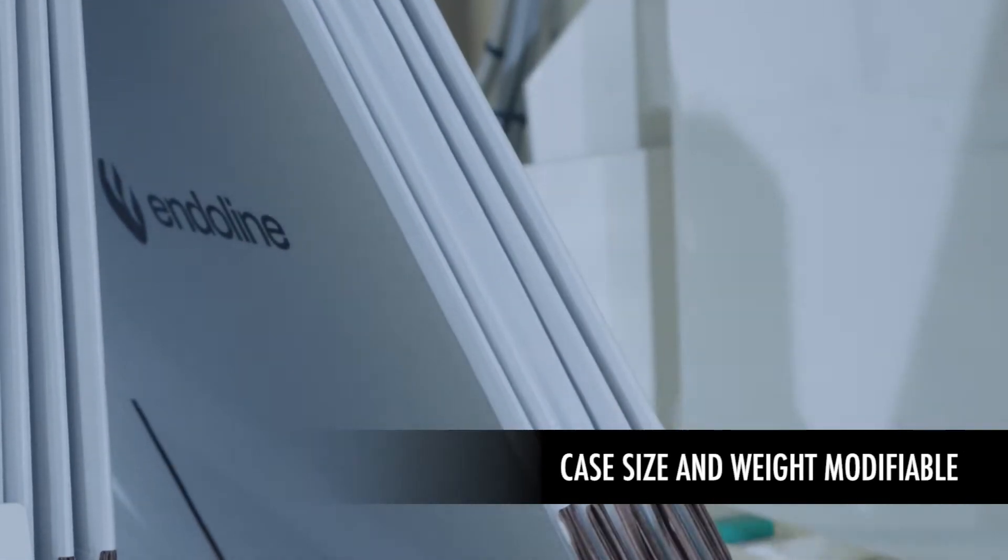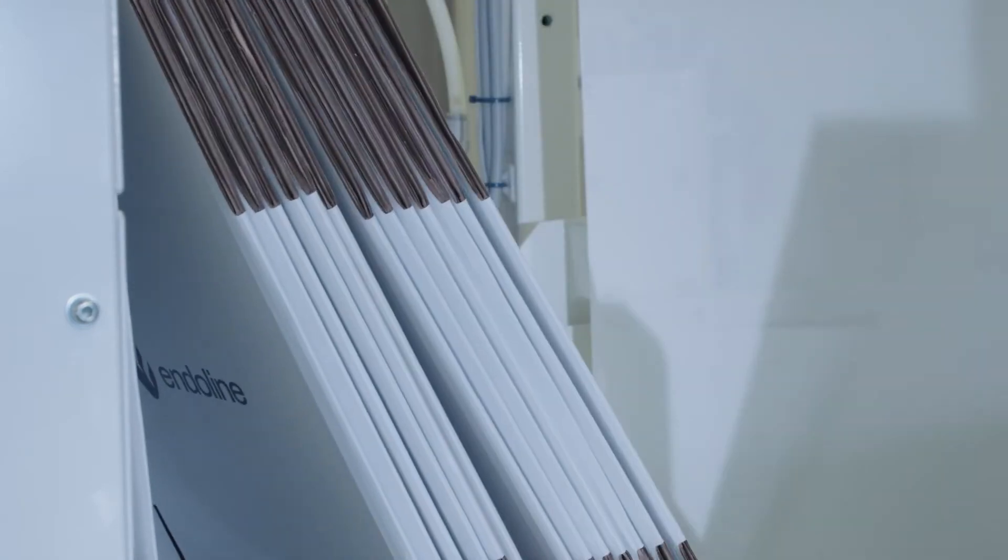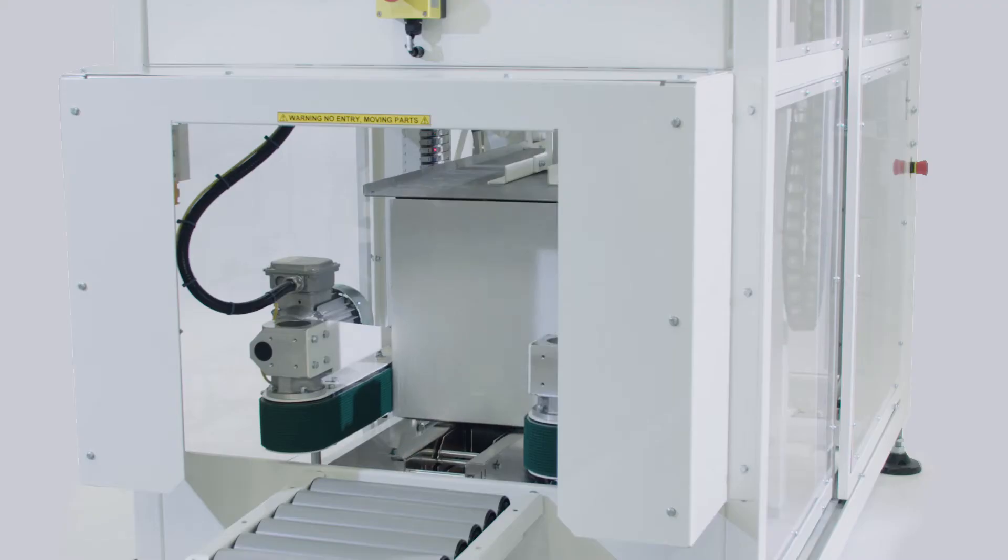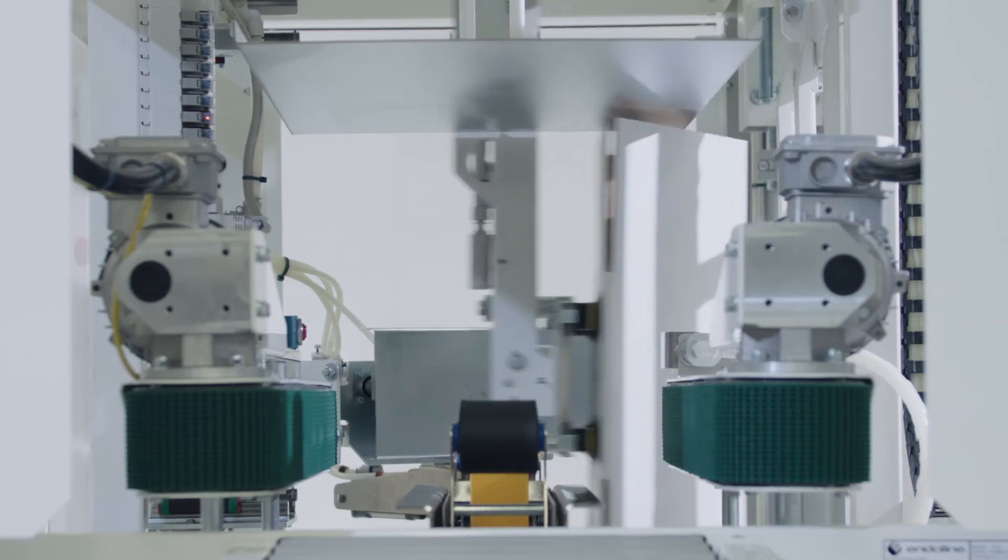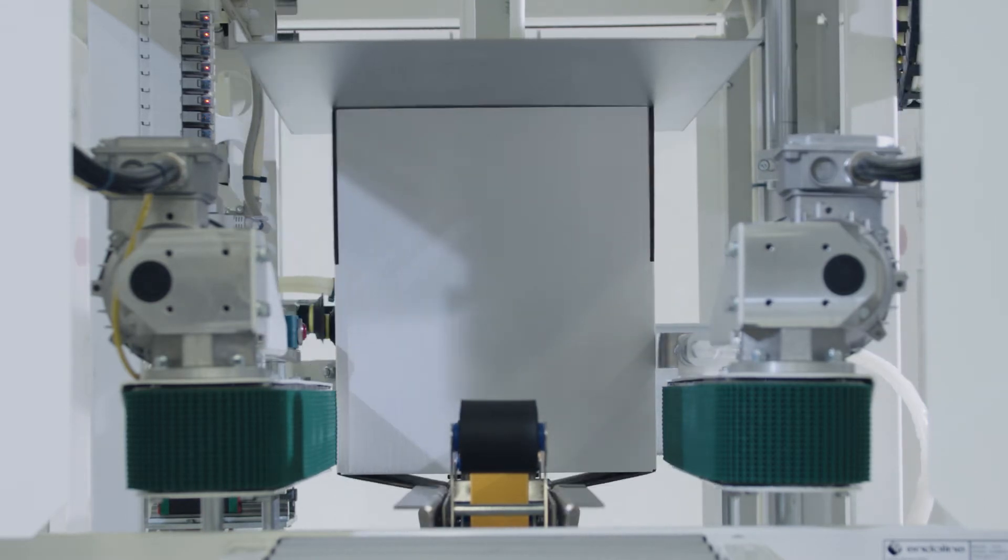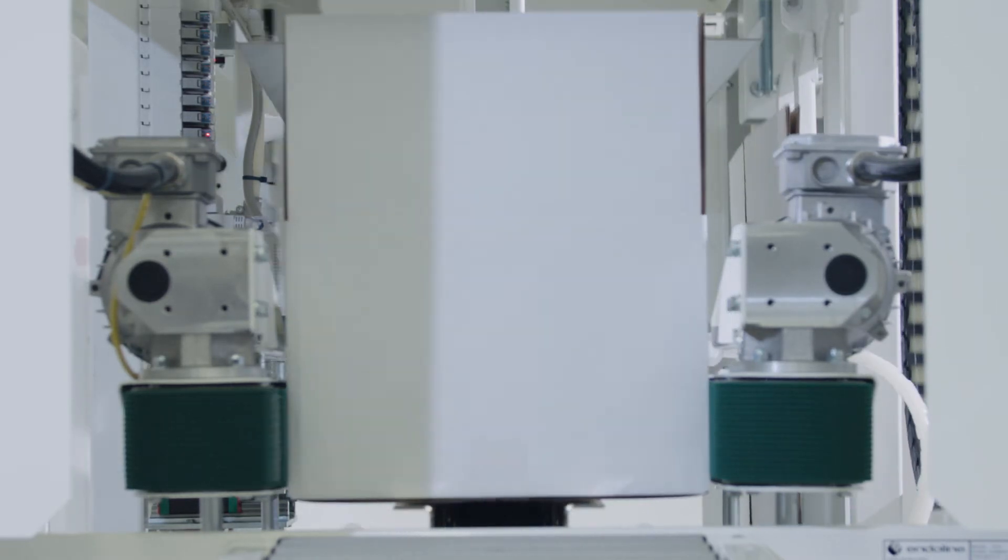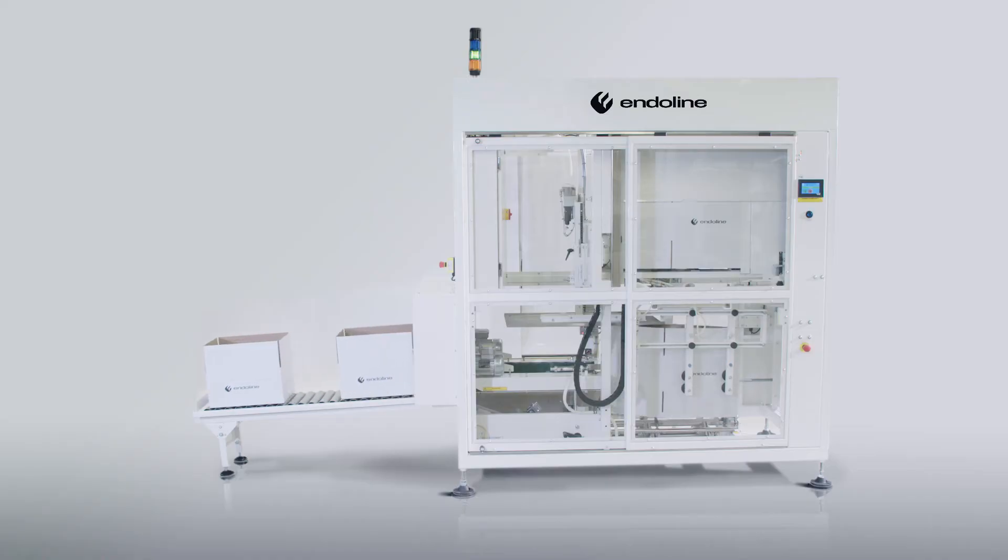Easy accessible case reloading whilst the machine is in full operation ensures an uninterrupted packaging process. Combined with its rapid case size change capability, simple tape unit replacement and small footprint, the 251 is designed to give you a fantastic return on your investment.